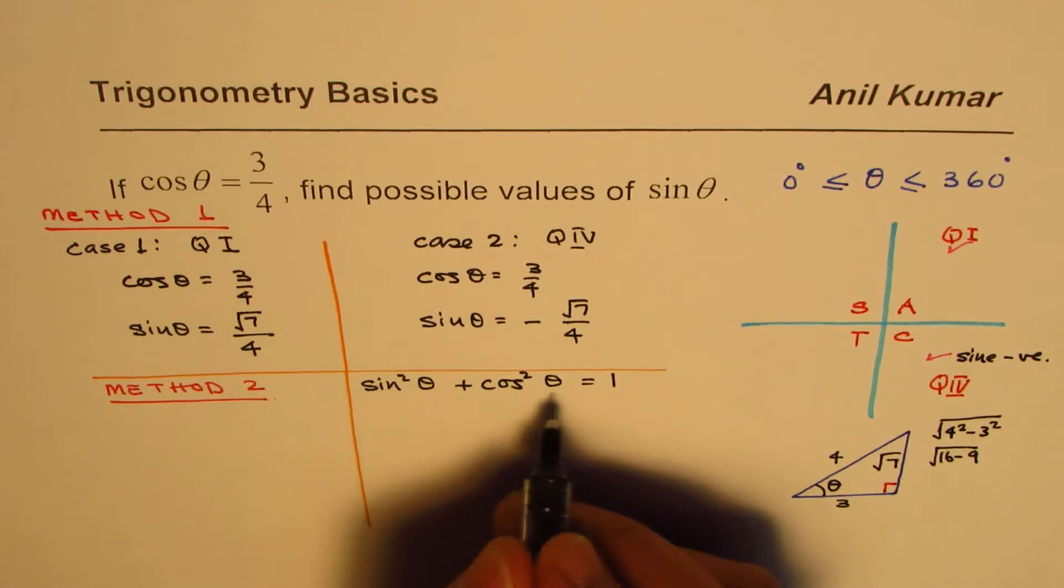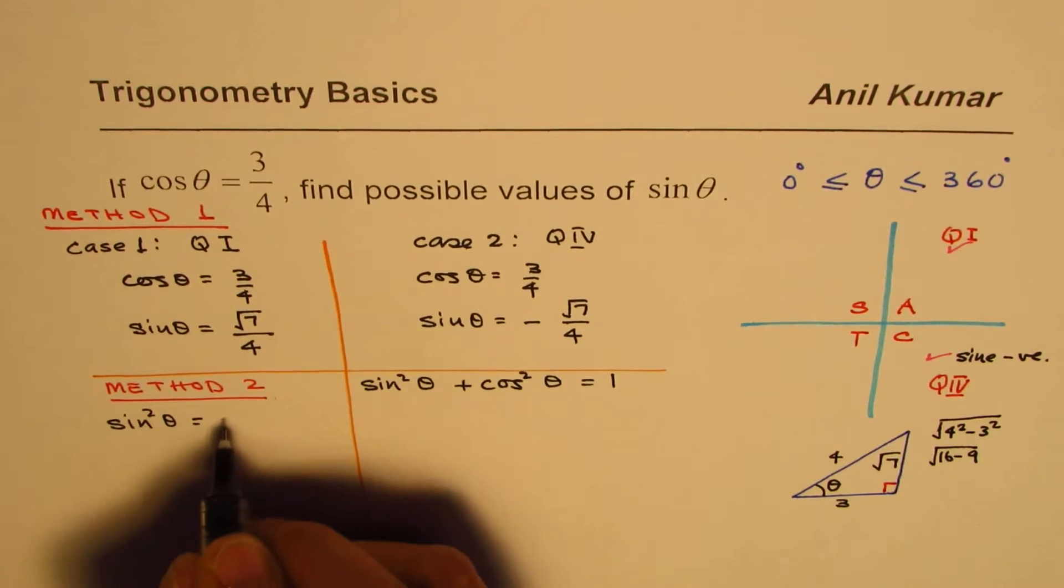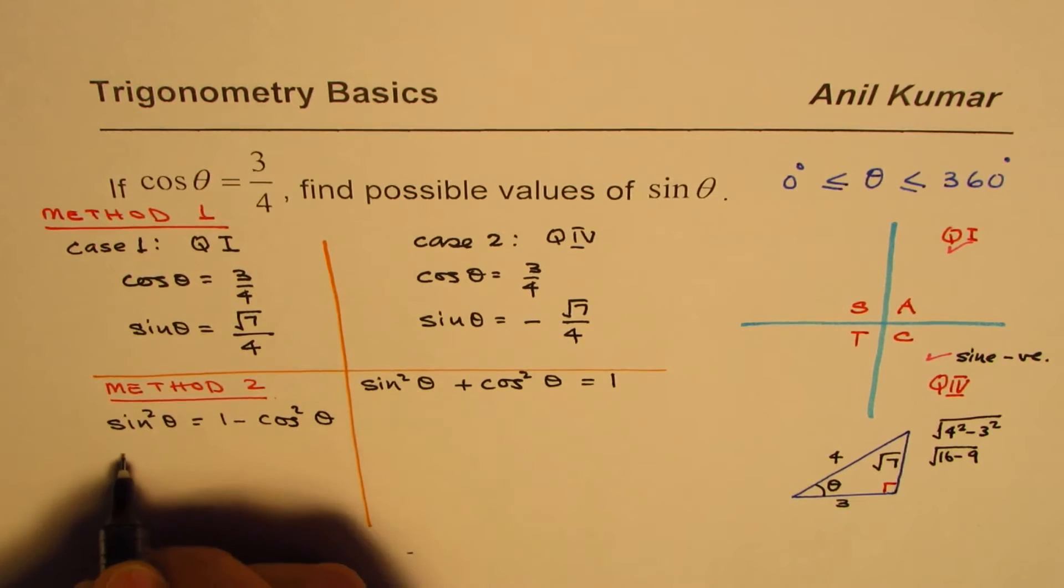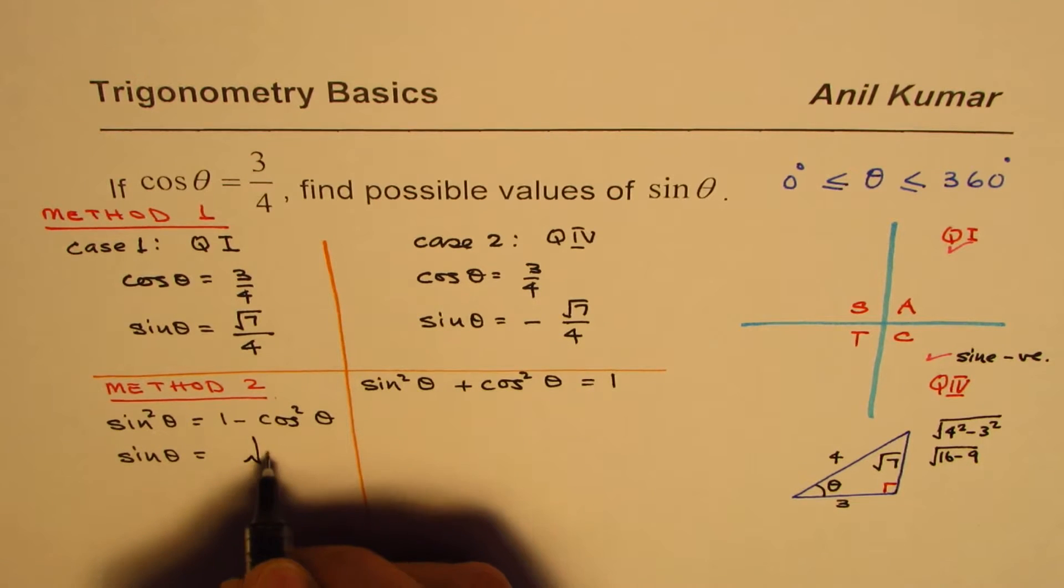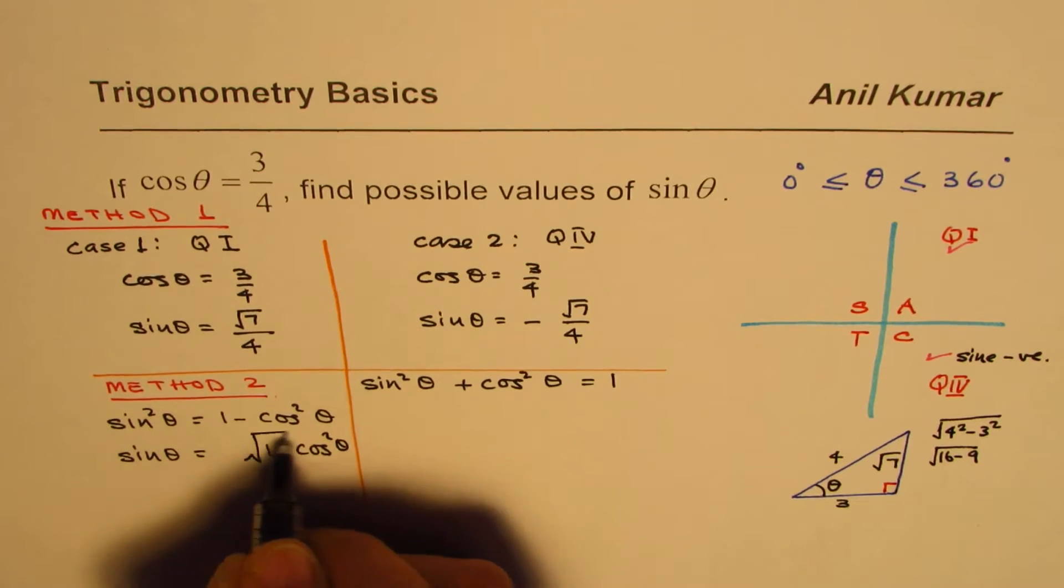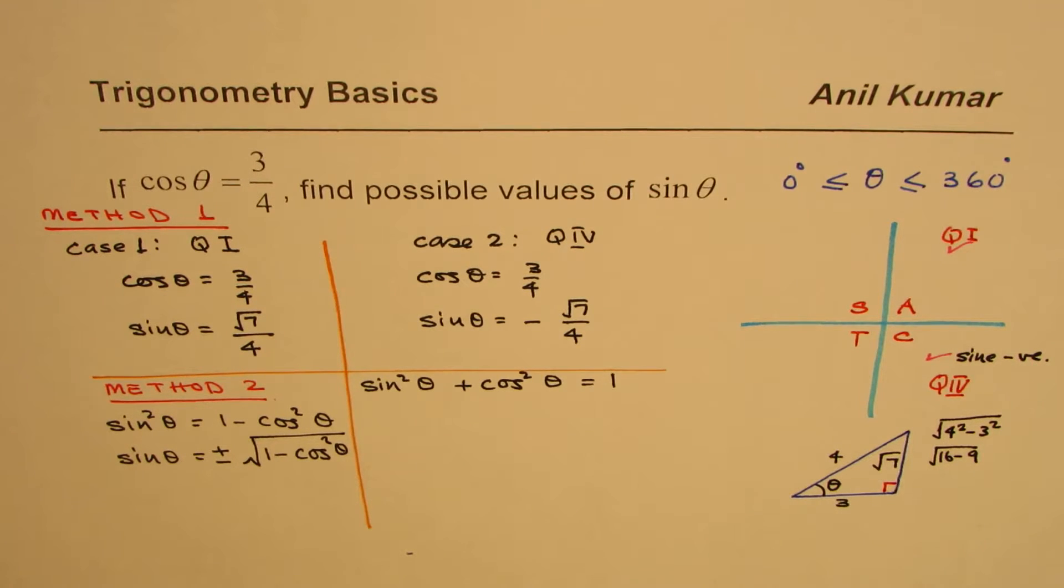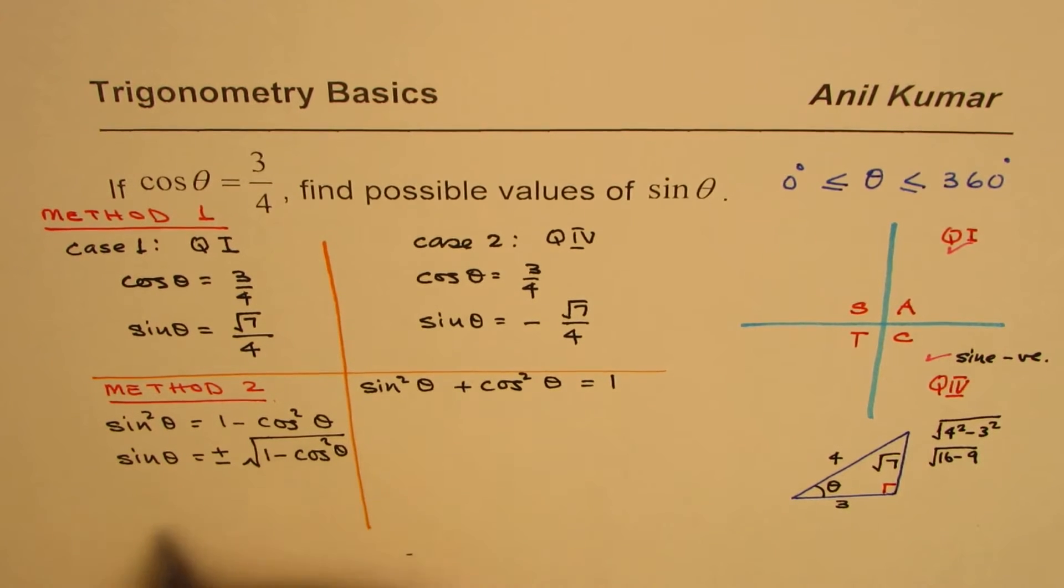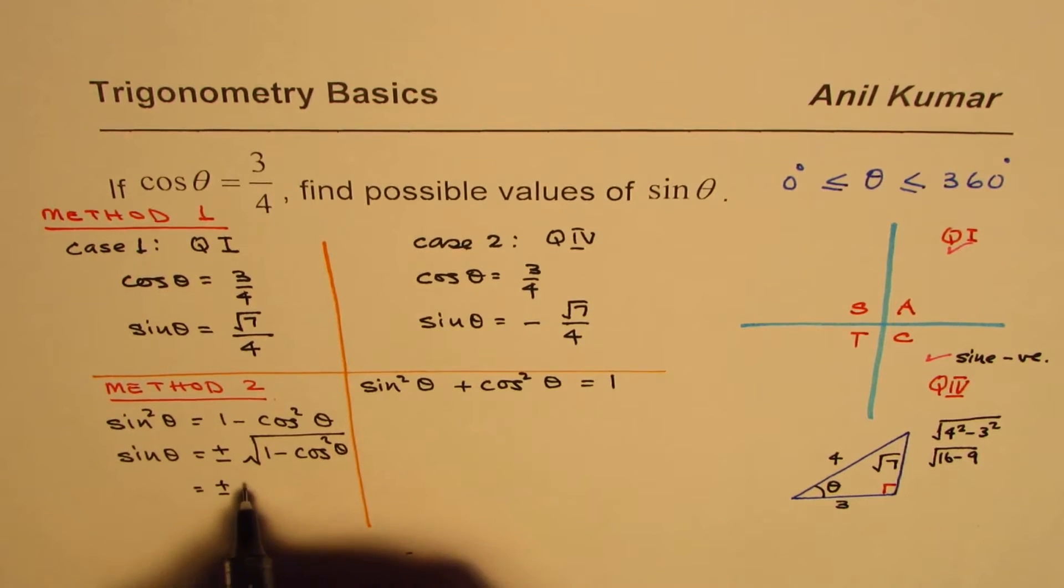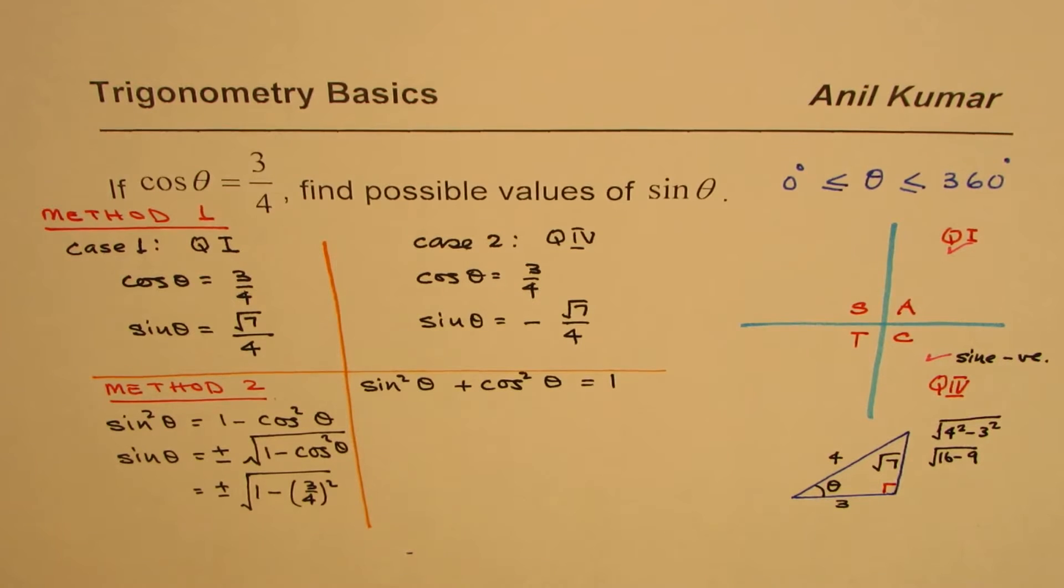So rearranging this formula we can find what sin theta is. From here we can write sin square theta equals to 1 minus cos square theta, or sin theta equals to square root of 1 minus cos square theta. And whenever you do square root, you have to take both positive and negative. Since we know cos theta, we can substitute this value here. So we get plus minus square root of 1 minus 3 over 4 whole square.